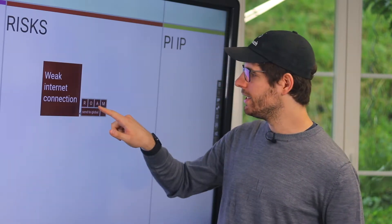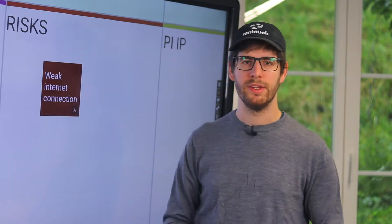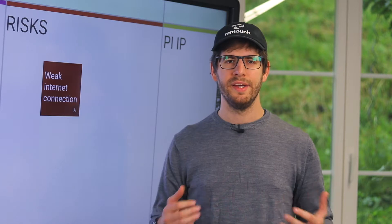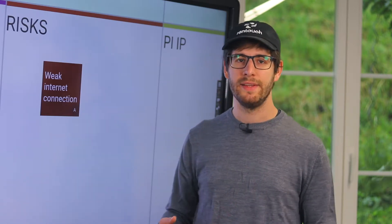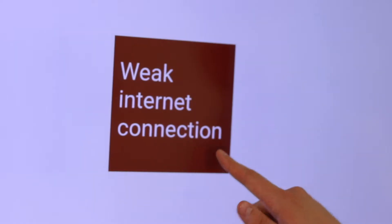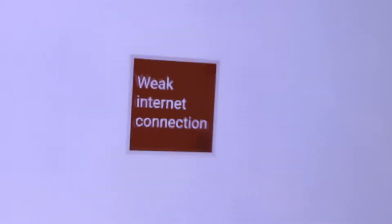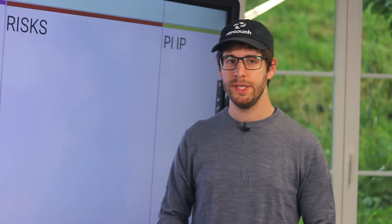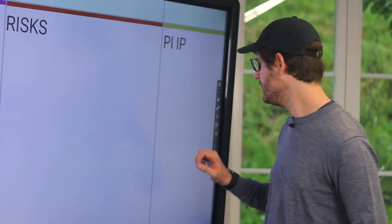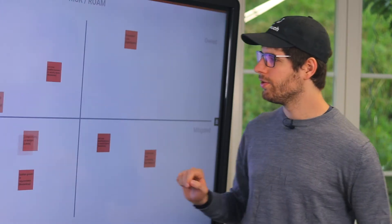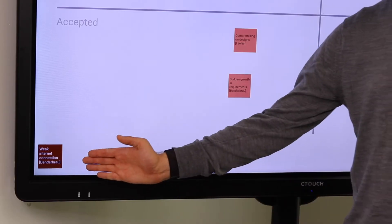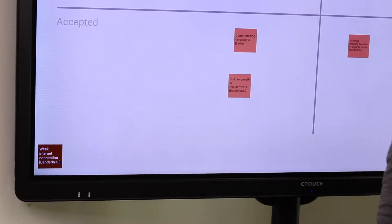If it is a team risk, they can roam it right here on the team board. If it is a program risk, the team can send it to the program risk board. In this case, the risk disappears from the team board and it appears on the program risk board in the lower left corner.